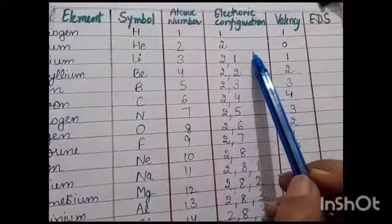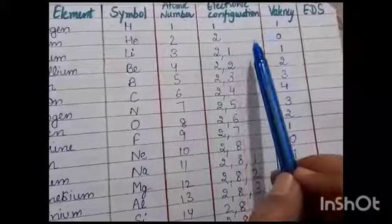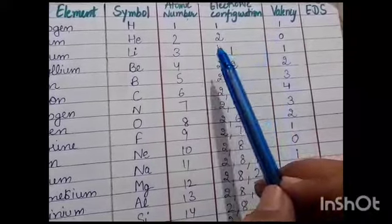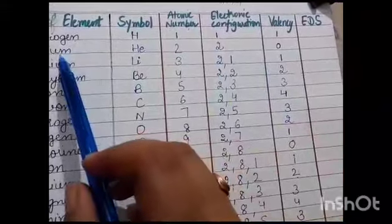Those elements whose valency is zero, that means they do not need any electrons from the foreign element to complete its octet. Therefore, these are known as noble gases.